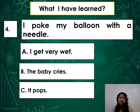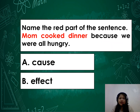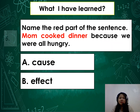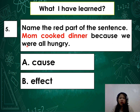Number 4: I poke my balloon with a needle. Is it A — I get very wet; B — the baby cries; or C — it pops? And lastly, number 5: Name the red part of the sentence — 'Mom cooked dinner because we were all hungry.' Is it A — cause; or B — effect? A or B?